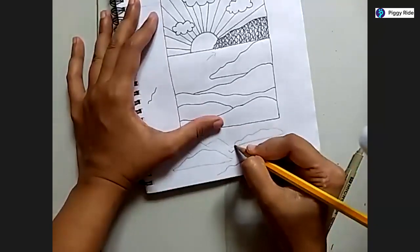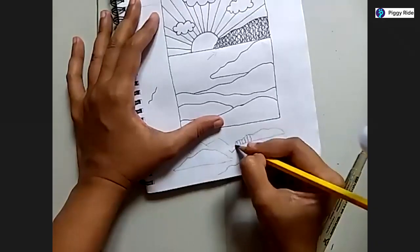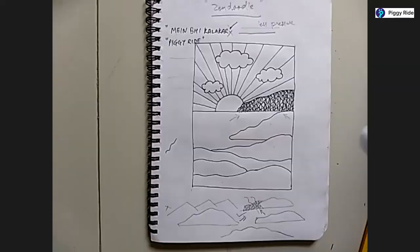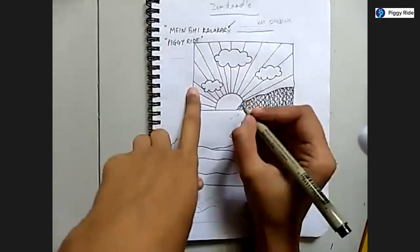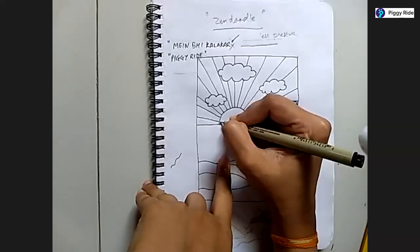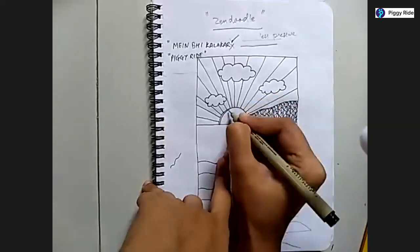I started making cement lines. Now for the sun, what we will do, I am going to make one more curved line inside the sun.